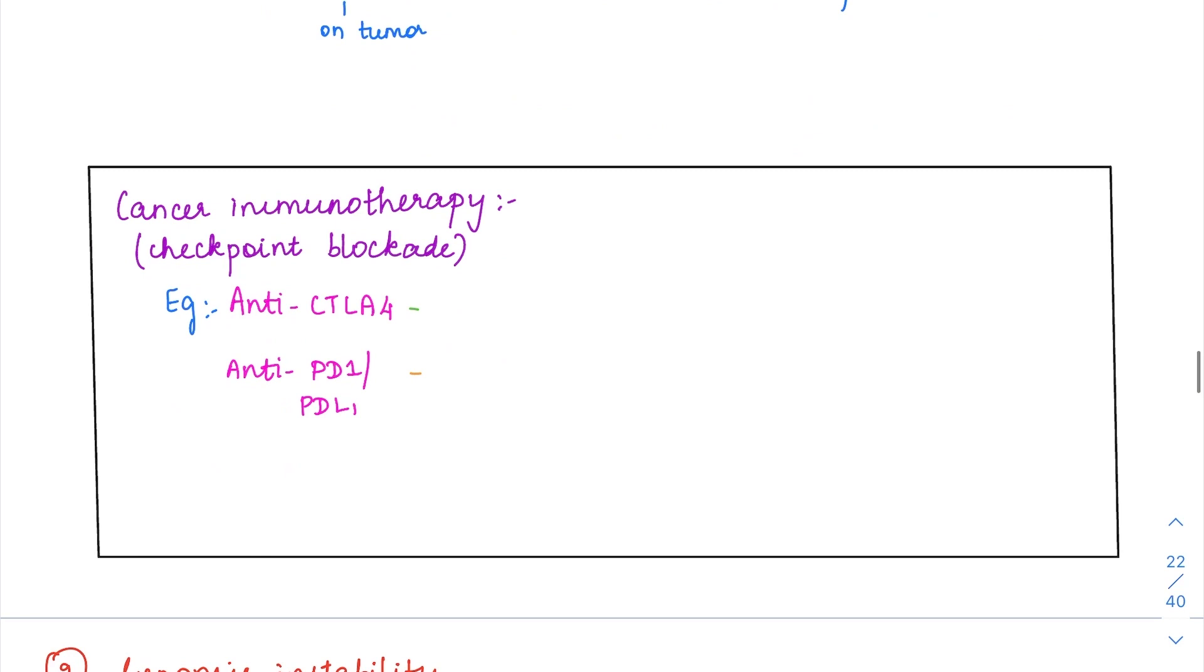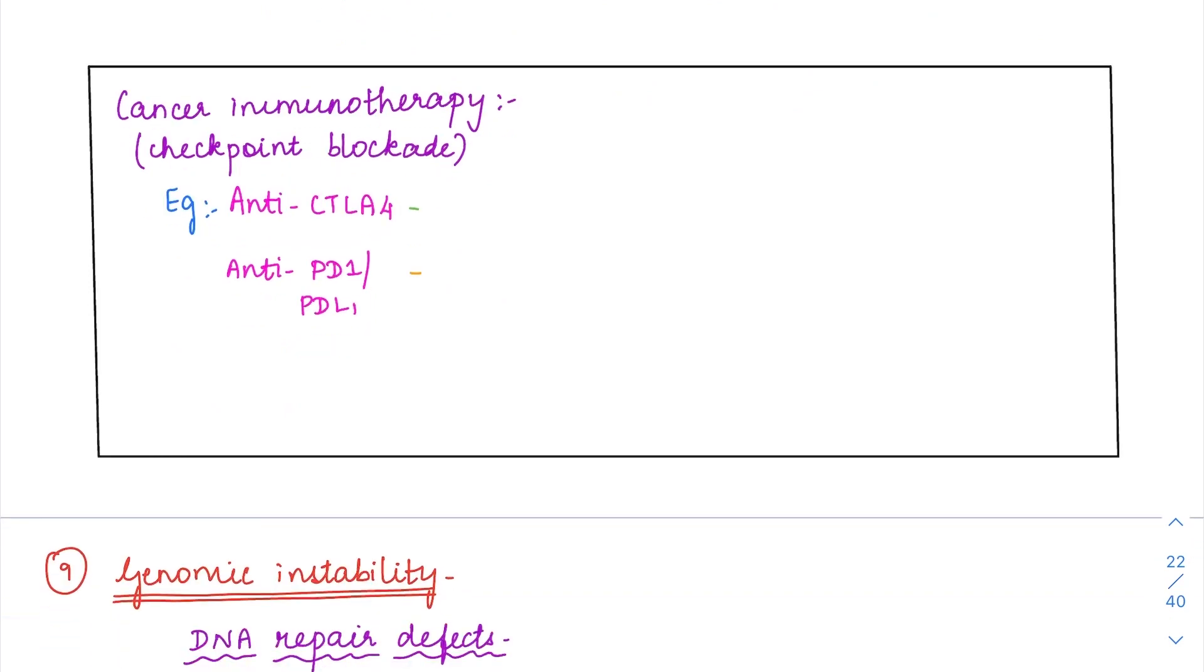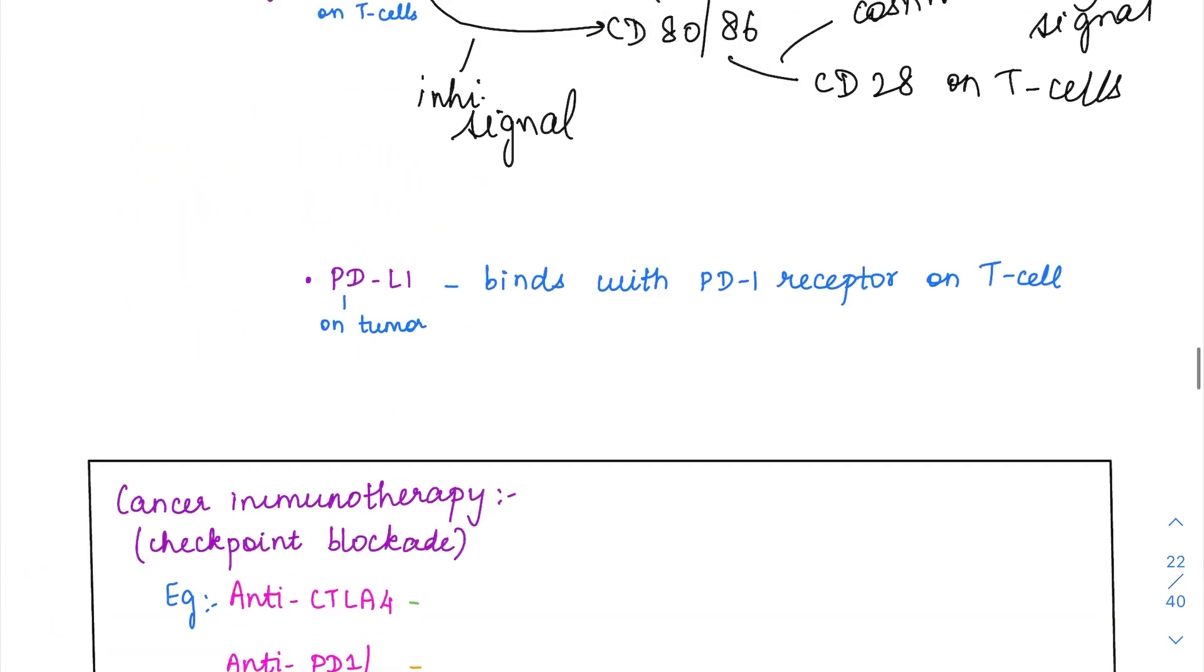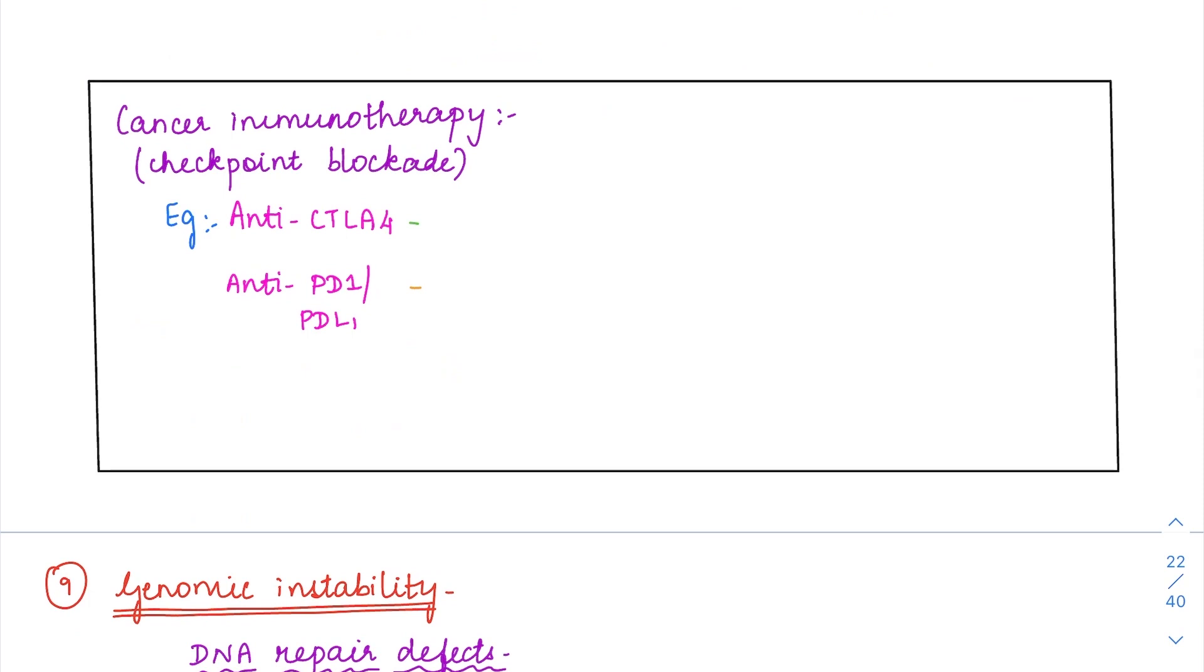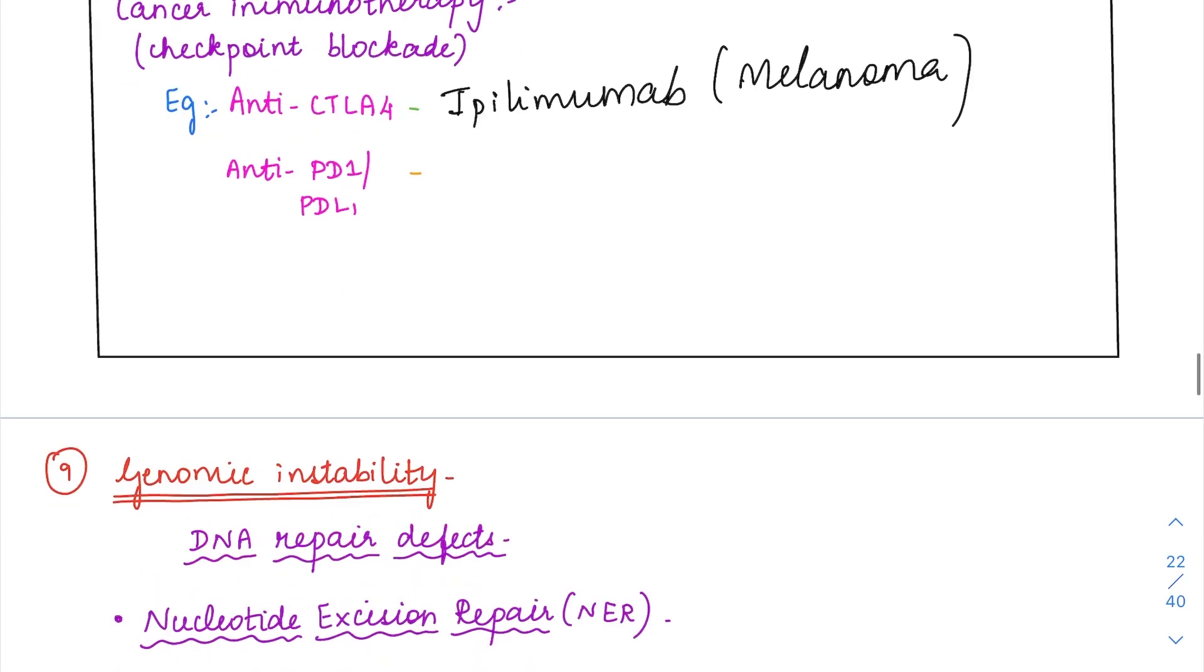In cancer immunotherapy, we have two drugs basically, one is anti-CTLA-4 and another one is anti-PD-1 and anti-PD-L1. These two interactions were actually causing inhibitory signal to the T cells. If I am going to inhibit the CTLA-4 and PD-1 or PD-L1, this can be overcome so that the T cells remain active and they can kill the tumor cells. We are going to use this anti-CTLA-4 drug which is ipilimumab, which is a monoclonal antibody. Ipilimumab has been approved by the FDA for usage in melanoma treatment.